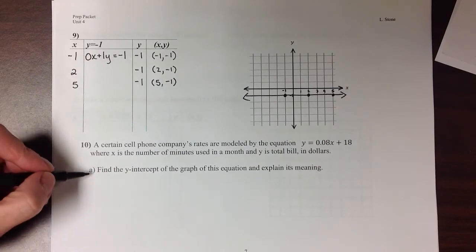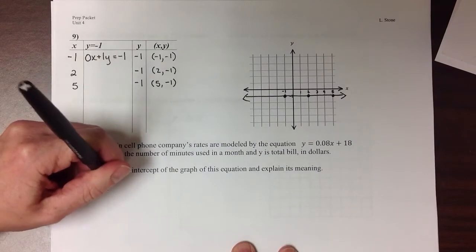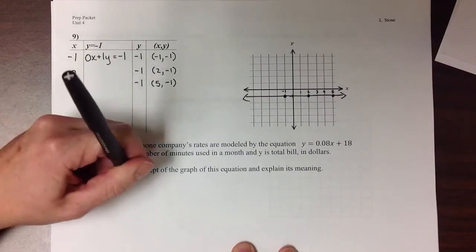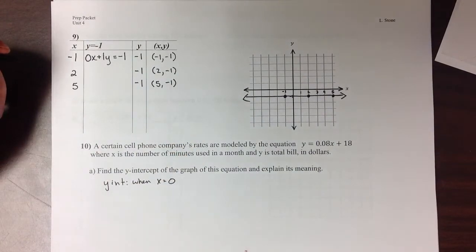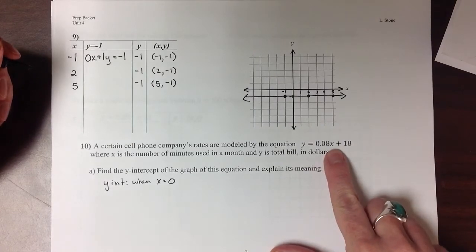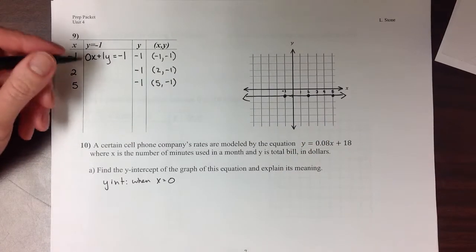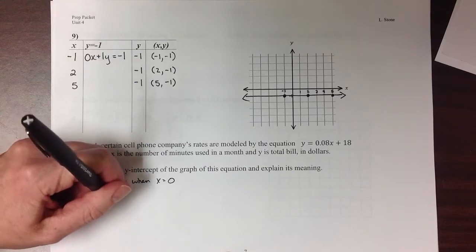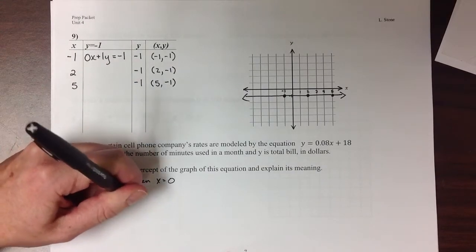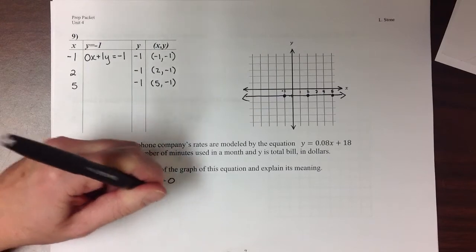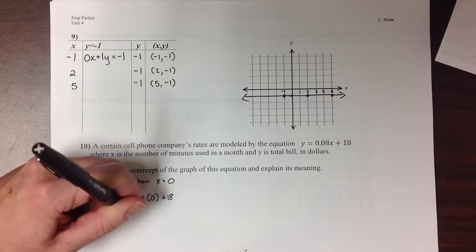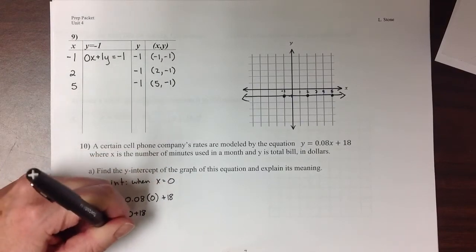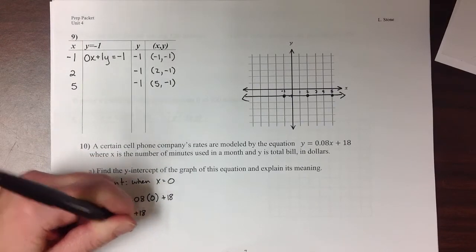The first thing they ask us to do is find the y-intercept. Now remember, the y-intercept occurs when x is equal to 0. So we're going to put a 0 in place of the x in this equation and solve it. We get y equals 0.08 times 0 plus 18, which is y equals 0 plus 18, or y equals 18.